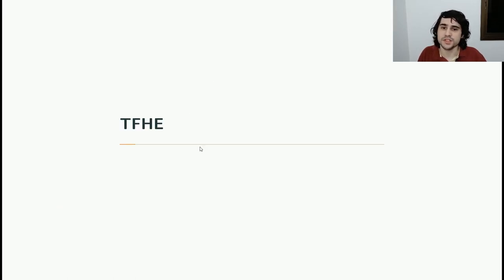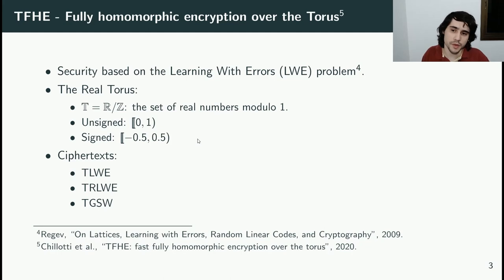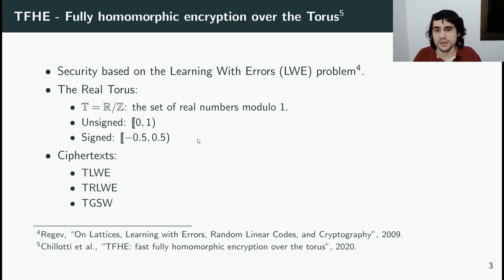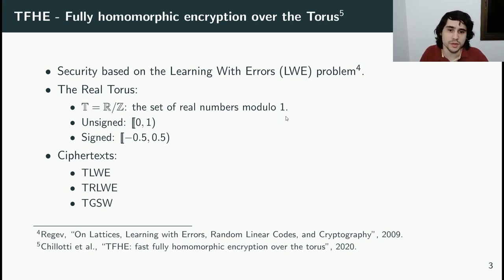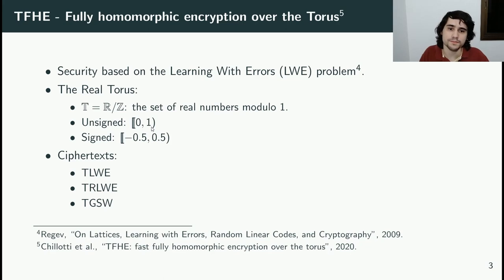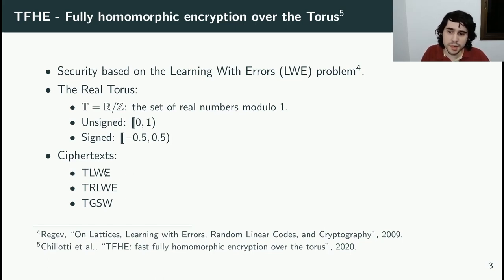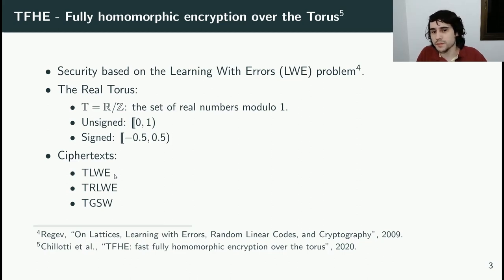TFHE is based on the Learning With Errors problem, and it is basically an instantiation of the problem using elements in the real torus, which is the set of real numbers modulo 1. Inside the representation, it's the numbers in this interval. It has three types of ciphertexts, and in this work we will use mostly the first two of them, which I will cover in detail in the next slides.